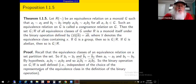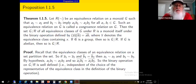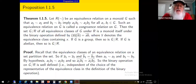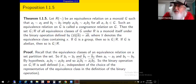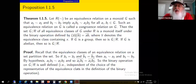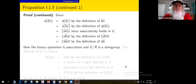Since a1·b1 is equivalent to a2·b2, they're in the same equivalence class — so the equivalence class of a1·b1 equals the equivalence class of a2·b2. This means the binary operation on the collection of equivalence classes is well defined: we can choose any representative of each equivalence class and it produces the same output equivalence class, independent of the representatives chosen.